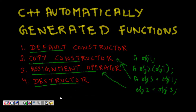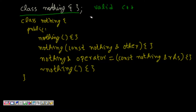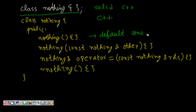Let's see with an example: 'class nothing'. This code is a valid C++ code — there is nothing wrong with it, I have nothing inside the class body but it is a valid class. What C++ does is it generates code: 'class nothing public' — and first it generates the default constructor.